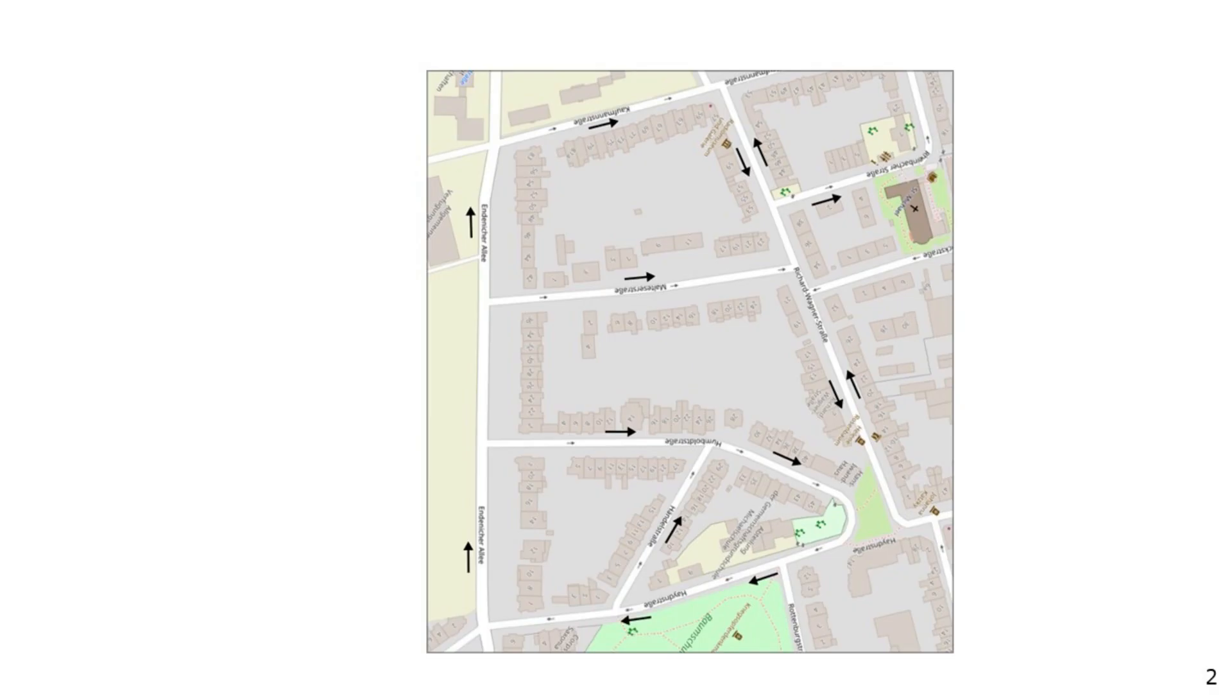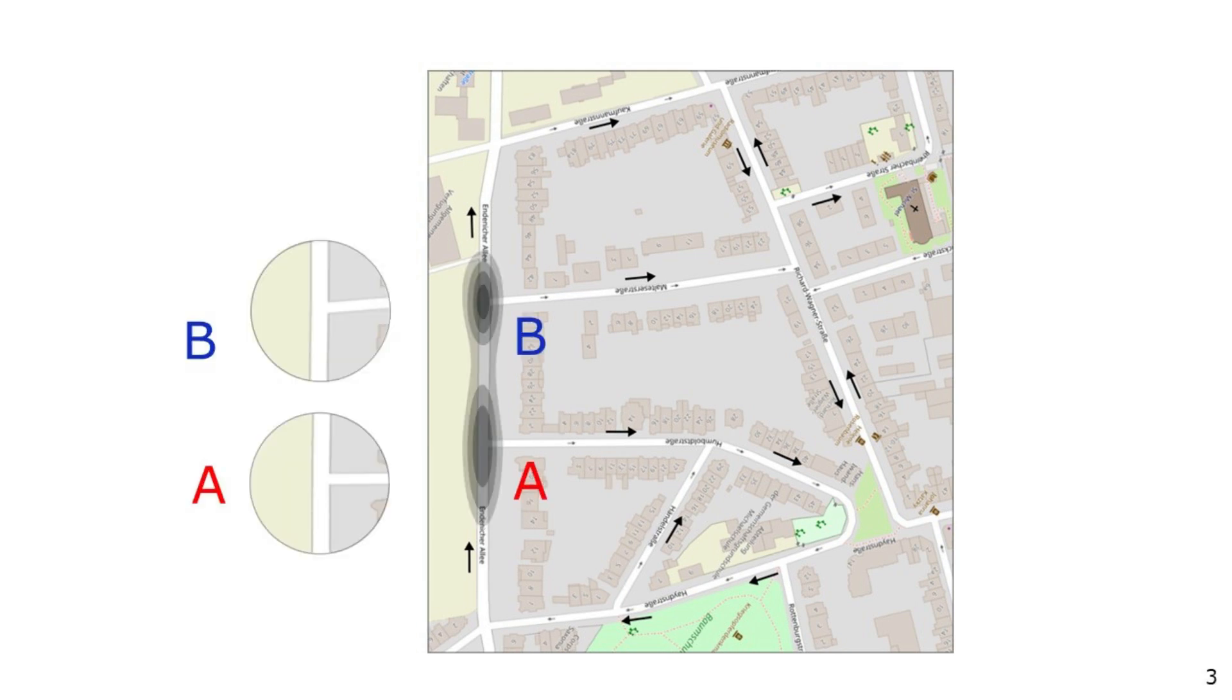Consider a robot that navigates on a road network using a laser-based localization system. In the current belief about its position, the robot cannot disambiguate intersections A and B, as they present a similar structure.